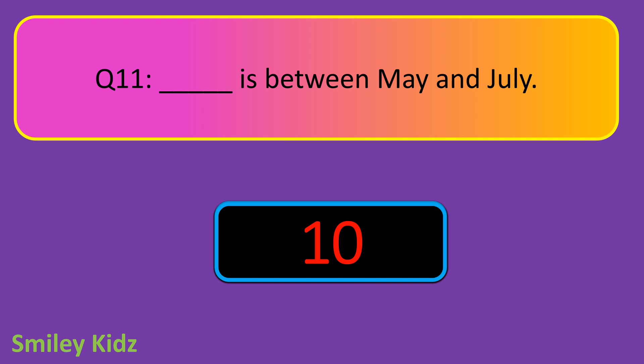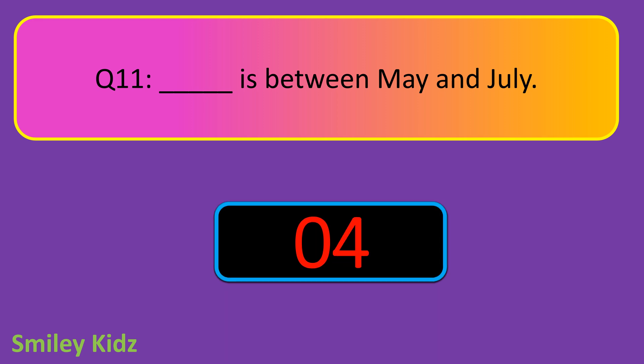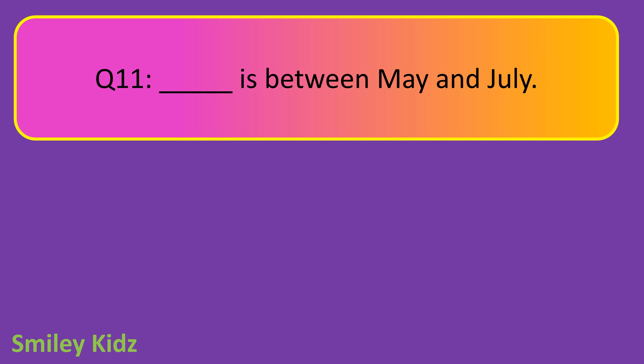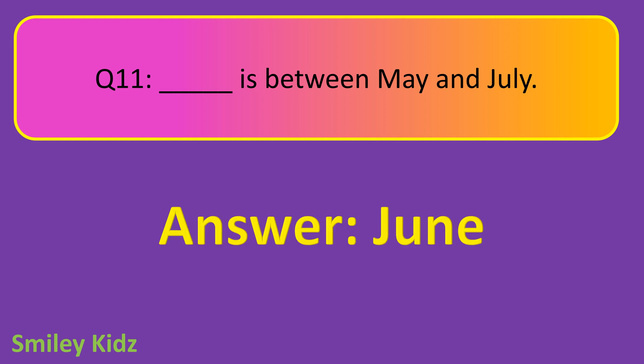Question number 11. Dash is between May and July. Your time starts now. And your time is up. The right answer is June. June is between May and July.